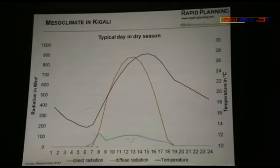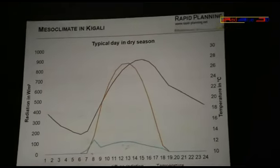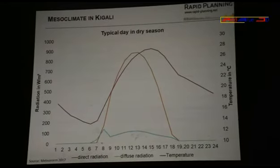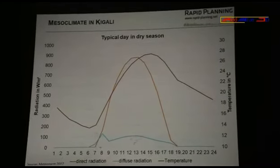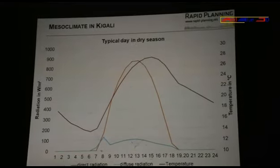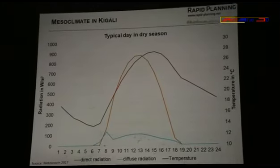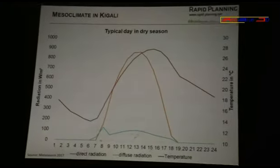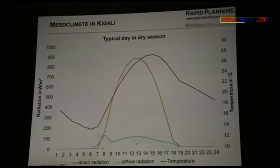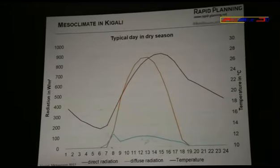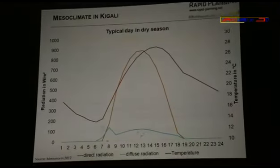Then we have a typical day in the dry season. Things change: we have very hot temperatures up to 28 degrees during the day and 14 degrees during the night. We have high solar radiation, which causes the hot temperatures during the day. At night, we have radiation between the earth and the clear sky, and the clear sky has minus 40 degrees. So at night the air and the ground cool down. We have colder nights in the dry season because there are no clouds to prevent this radiation between sky and ground, giving us cool nights around 14 degrees.